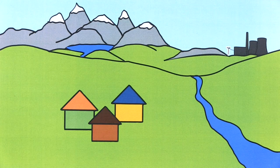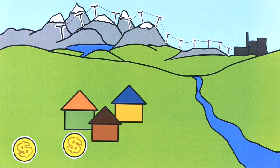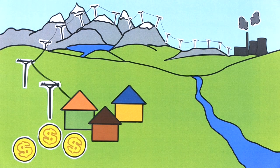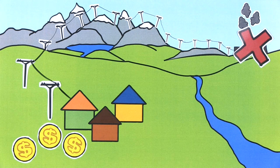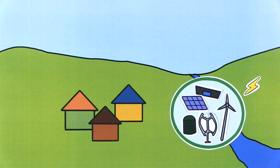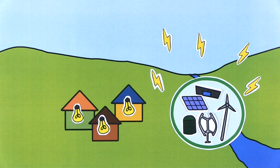In rural and remote locations in developing countries, the connection to the centralised grid is often hindered by complex terrain, high investment costs and low power demand. Moreover, centralised power plants often run on fossil fuels and are therefore highly unsustainable. In remote places, distributed renewable electricity systems can be the most convenient option, and sometimes even the only option to generate and supply clean electricity to the local communities.